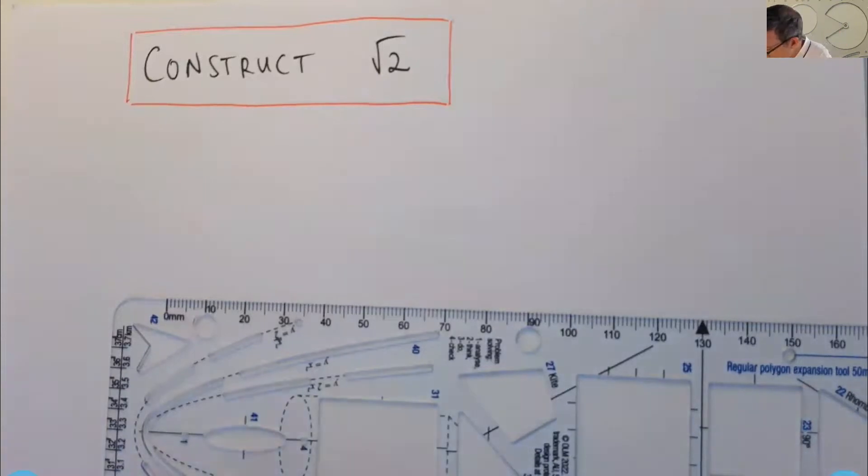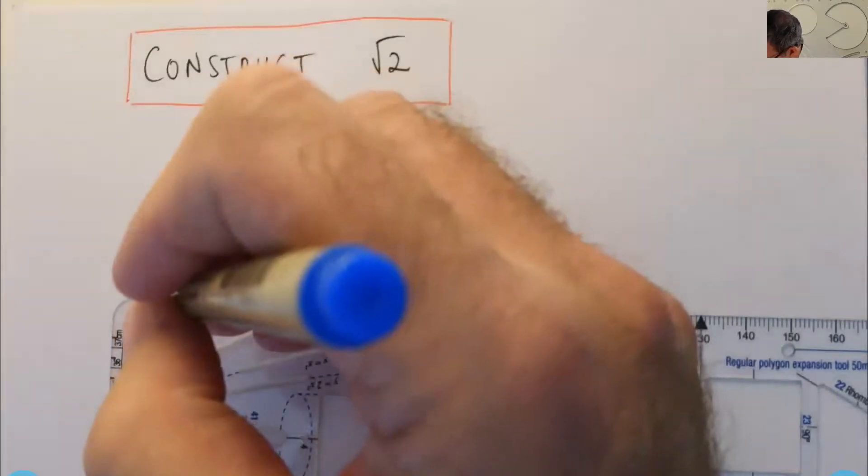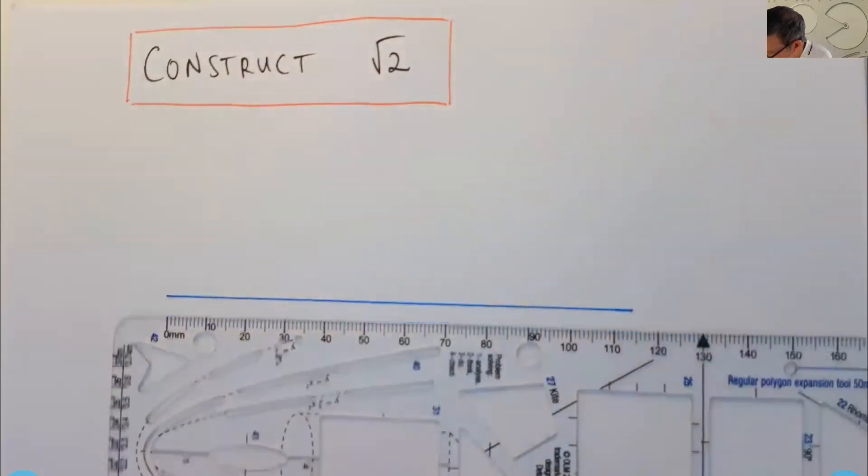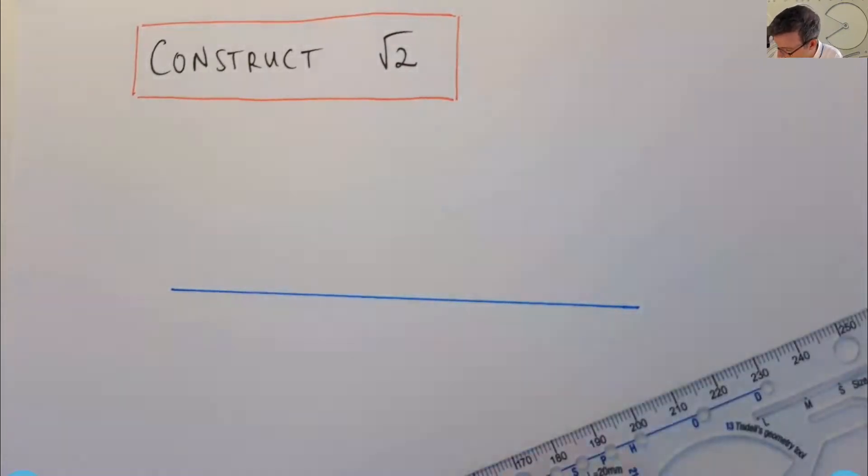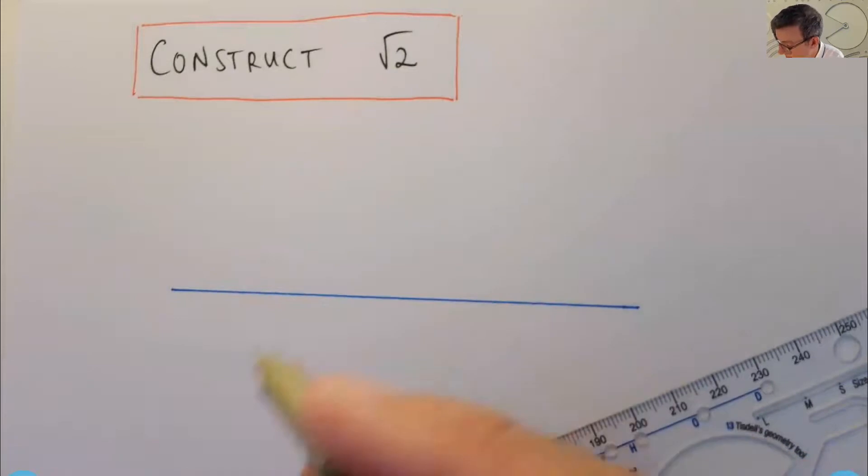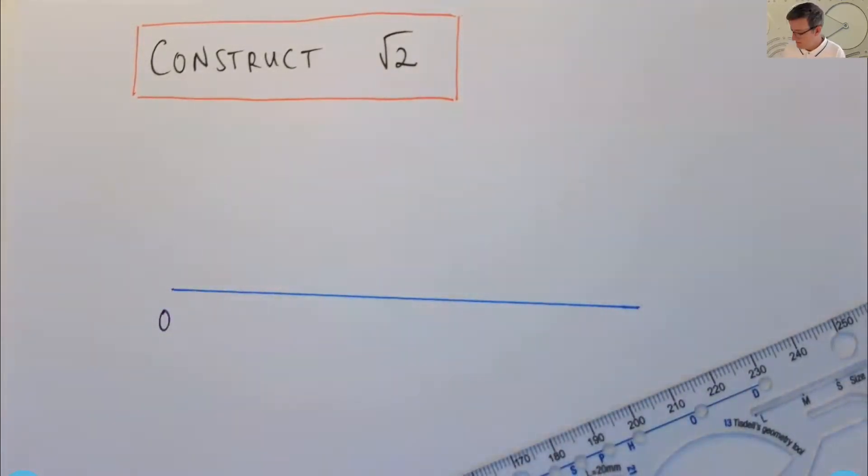So let me start off by drawing a line segment. And from that, I'm going to construct the set of integers, natural numbers. So one, two, three, four, those sorts of things.